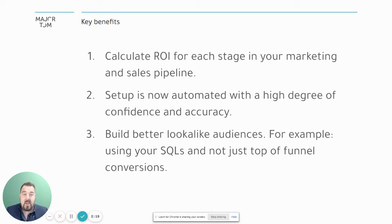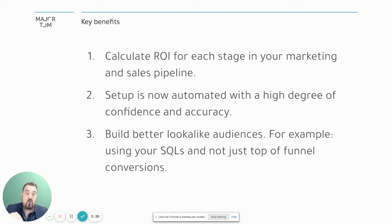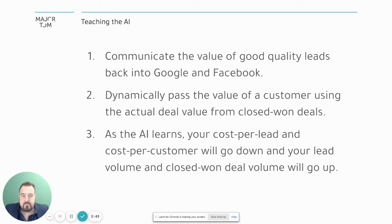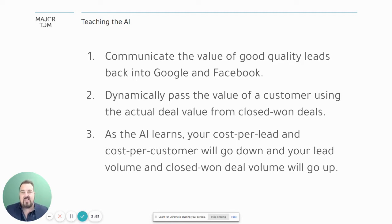We can also build better look-alike audiences from this data. Previously, we would optimize for conversions, but there could have been junk in those conversions — maybe a job seeker filled out your lead form or someone was trying to sell you through the website. Now you can optimize further down in the funnel and tell the AI to give you more good quality leads, and we're able to pass the value of a closed-won deal back into the originating advertising source.